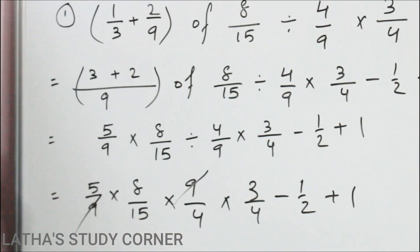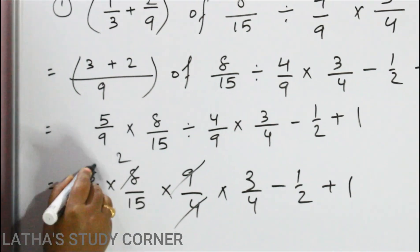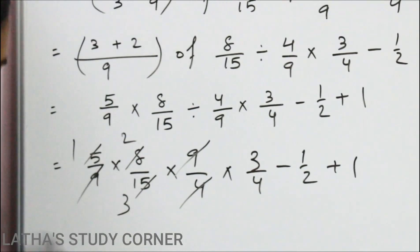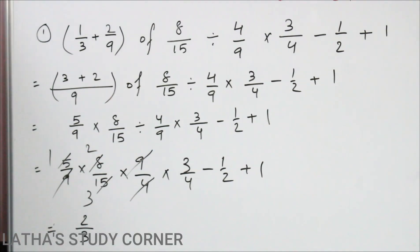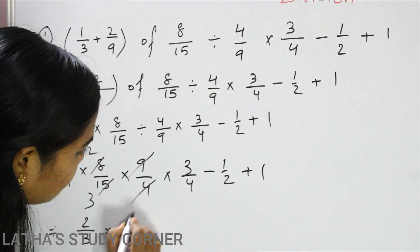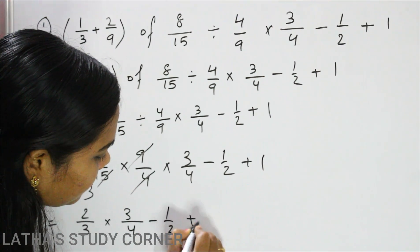You can see here 9, 9 cancel, 4 1 jar, 4 2 jar, 5 1 jar, 5 3 jar. So what is its value? Its value is 2 by 3, its value is 2 by 3 into 3 by 4 minus half plus 1.